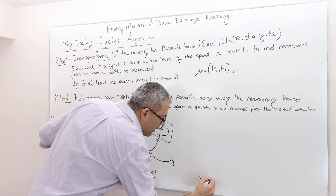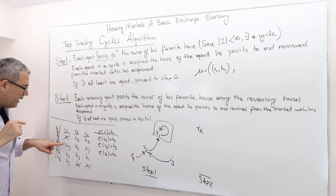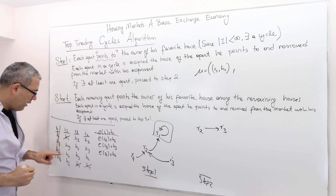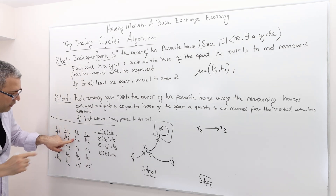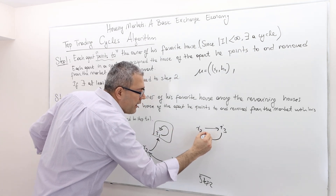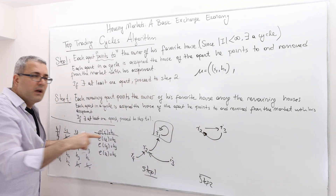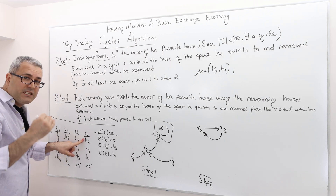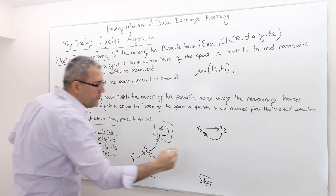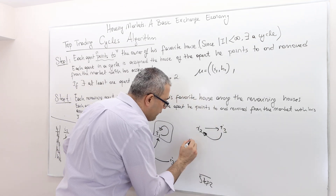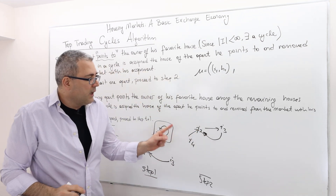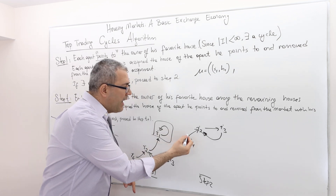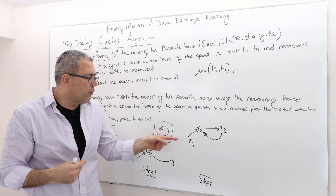Now I rerun the same thing among the remaining players. In step two, agent two's favorite house is house three, which belongs to agent three. So agent two points to agent three. Agent three's favorite house is house two, which belongs to agent two. So agent three points to agent two. So we have a cycle between agents two and three. Agent four's favorite house is house two, which also belongs to agent two, so agent four points to agent two. However, agent four is not part of the cycle, because once you start from agent four, you can never come back to agent four.